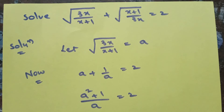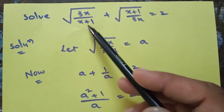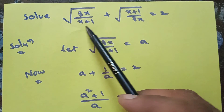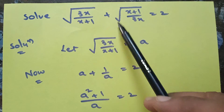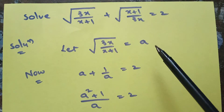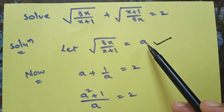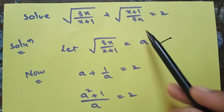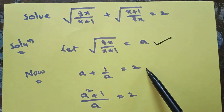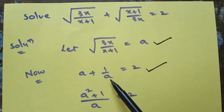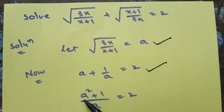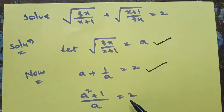One more problem: the square root of (3x divided by x+1) plus the square root of (x+1 divided by 3x) is equal to 2. Let the first term equal a, then the second term becomes 1 by a. Substituting gives a plus 1 by a equals 2. Taking LCM: (a squared plus 1) by a equals 2.